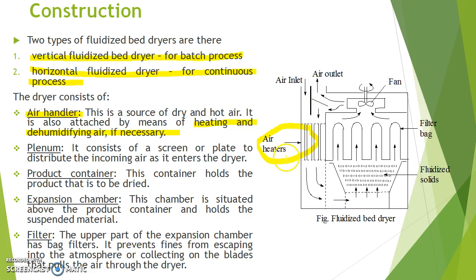The air handler consists of air inlet, air heaters, and air outlet. The next part is the plenum, which consists of a screen or plate to distribute the incoming air as it enters the dryer.